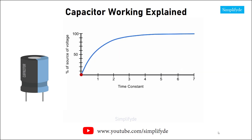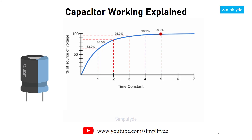All capacitors charge at the same percentage rate based on the universal charge curve. After one time constant the capacitor will have reached 63.2 percent of its potential, 86.5 percent after two time constants, and so on. After five time constants the capacitor has reached 99.3 percent of its potential and is considered essentially charged.